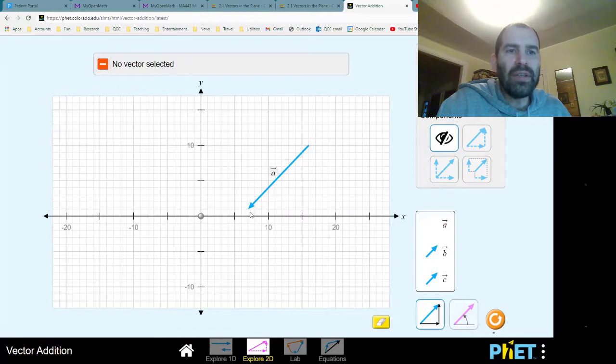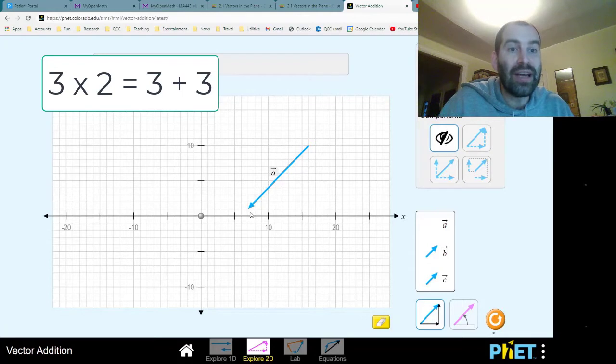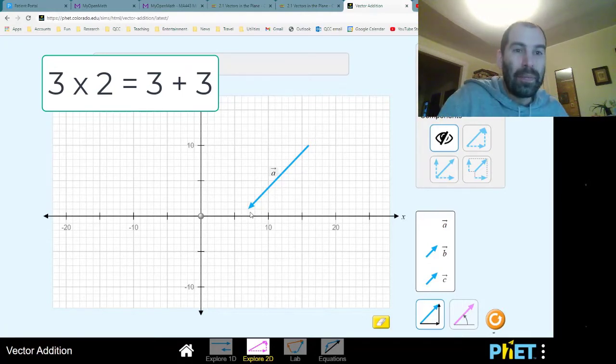So why would that make sense? Well, what does it mean to multiply a number, say, 3 times 2? Well, it means to double it. I add 3 to itself. So since I know how to add, I know how to multiply by 2. And so it makes sense that that would be how vectors work as well.